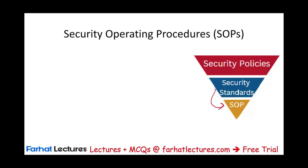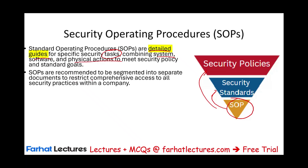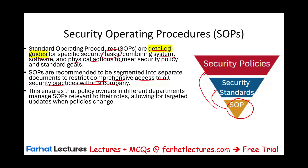After security standards, we have SOPs — standard operating procedures — which are detailed guides for specific security tasks. Here you are telling people what to do, combining system, software, and physical actions to meet security policy and standard goals. SOPs are the foot soldiers that implement the standards and security policies. SOPs are recommended to be segmented into separate documents to restrict comprehensive access to all security practices within the company — they tell you what you are responsible for, and this ensures that policy owners in different departments manage SOPs relevant to their roles.